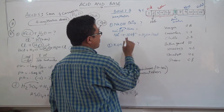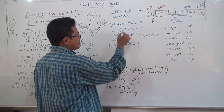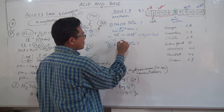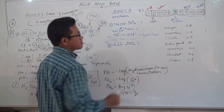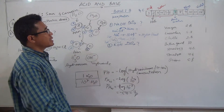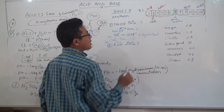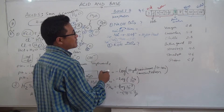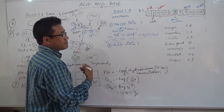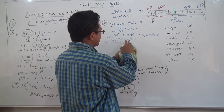What actually happens is the water molecules surround the sodium, and the hydroxide is separated out, producing a lot of heat. The important thing to remember is that sodium hydroxide accepts the hydrogen ion — it uses up the hydrogen ion. So it is a hydrogen ion acceptor.